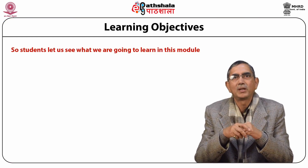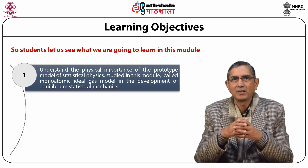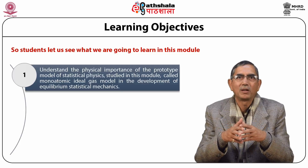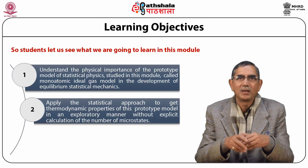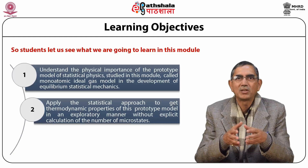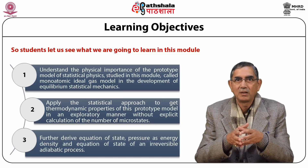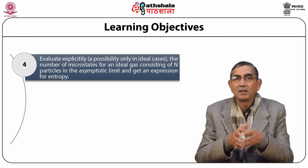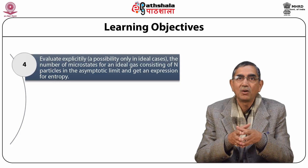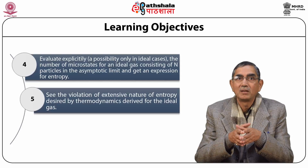Let us see what we are going to learn in this module. We intend to understand the physical importance of the prototype model of statistical physics — the monoatomic ideal gas model — in the development of equilibrium statistical mechanics. We will apply the statistical approach to get thermodynamic properties of this prototype model without explicit calculation of the number of microstates, and further derive the equation of state, pressure as energy density, and the equation of state of an irreversible adiabatic process. We will also evaluate explicitly the number of microstates for an ideal gas of N particles in the asymptotic limit and get an expression for entropy, observing the violation of the extensive nature of entropy required by thermodynamics.